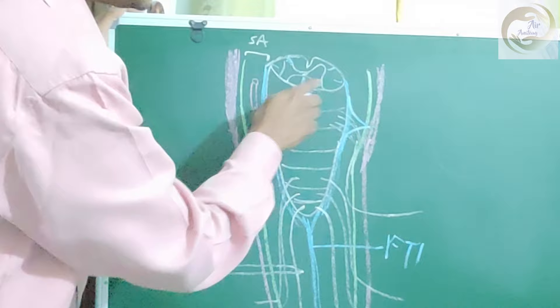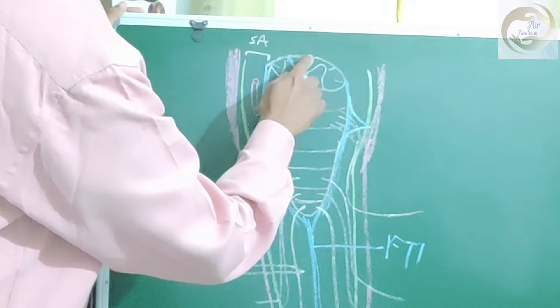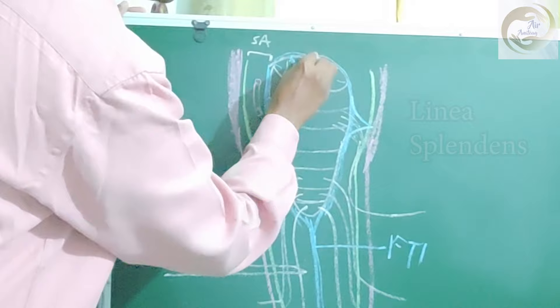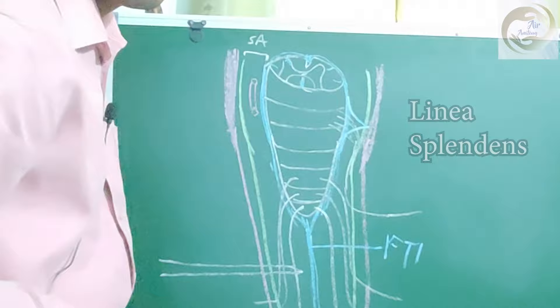The pia modifications are: the pia septa, the ligamentum denticulatum, the filum terminale, and also in the anterior median fissure region, a thickening of the pia called the linea splendens. These are all the pia modifications.